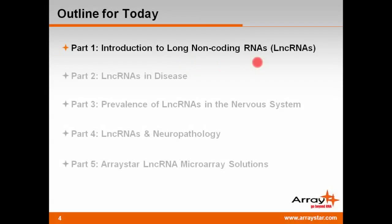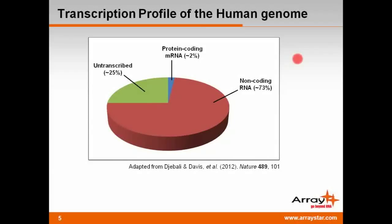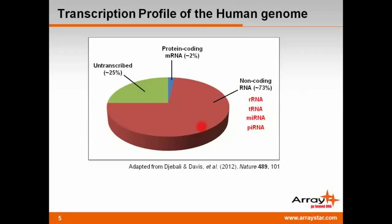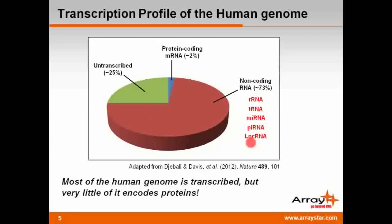Now I'll start with part one, introduction to long non-coding RNAs, also known as LNCRNAs. Despite the importance of protein coding genes in our lives, only about one to two percent of the human genome encodes proteins. However, about 75 percent of the genome can be transcribed among different cell types. The body of non-coding transcripts is comprised mainly of ribosomal RNA, transfer RNA, microRNAs, piRNAs, and the subject of today's talk, LNCRNAs. The take-home message is that most of the human genome is transcribed, but very little of it encodes proteins.